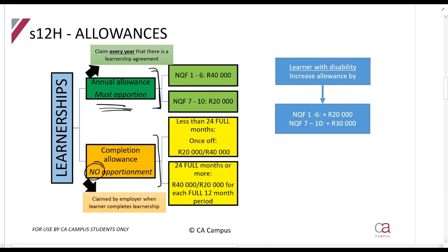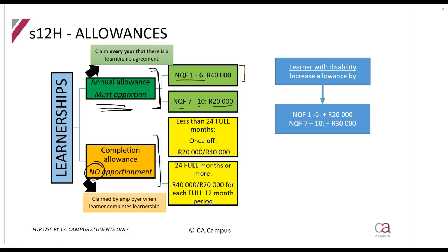How much do you get? If the learner is doing something registered at NQF level 1 to 6, you get R40,000 per learnership per year — those are your basic education levels. If it's NQF level 7 to 10, you get R20,000. The higher education levels get a slightly lower amount because they're trying to especially encourage the lower levels. Additionally, if the learner has a disability, you can add an extra R20,000 — making it R60,000 for NQF 1–6 — or an extra R30,000 for NQF 7–10, making it R50,000.